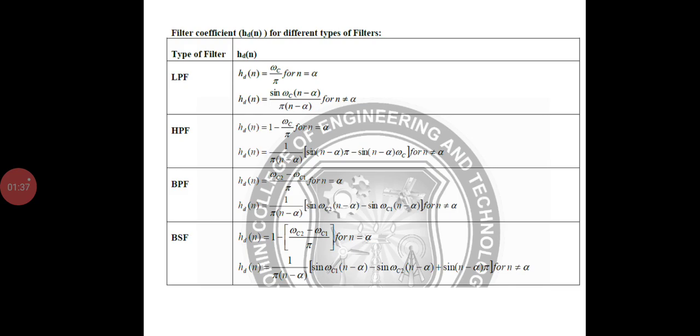These are the types of filters where h(n) varies for low pass, band pass, high pass, and band stop filters.